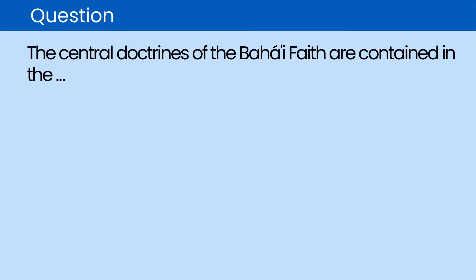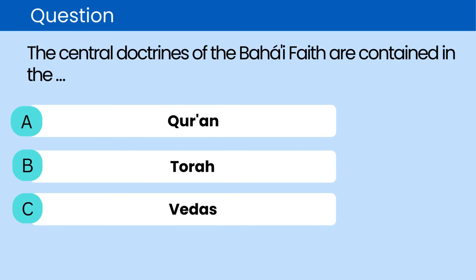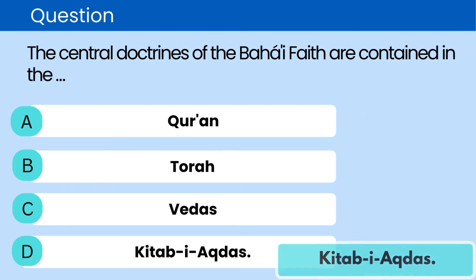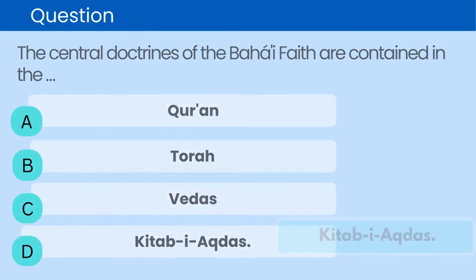Question: The central doctrines of the Baha'i faith are contained in the. A. Koran. B. Torah. C. Vedas. D. Kitabayaktas. The correct answer is D. Kitabayaktas.